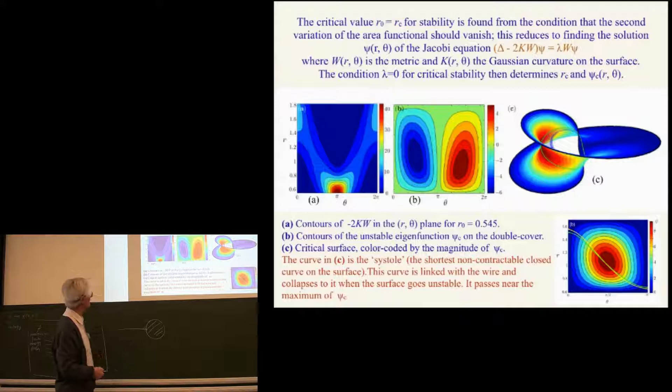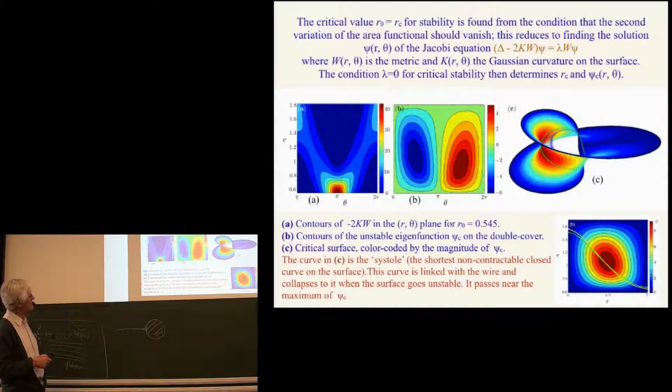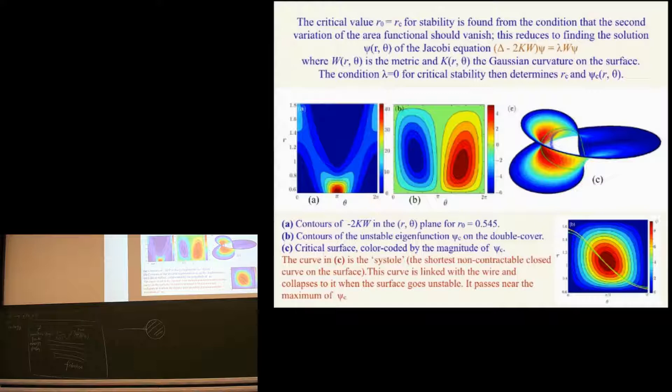And the mode of instability, where it's dark red here, that is where the mode of instability is maximal, and where the collapse is actually observed to occur. So, this ties in quite well with the observation, the fact that this hole of the Möbius strip does collapse to the point opposite on the boundary. The curve C is what's known as the systole, the curve of shortest length that actually goes around the hole. And that's very close to the location of the maximum of the eigenfunction, the unstable eigenfunction where the collapse is located.